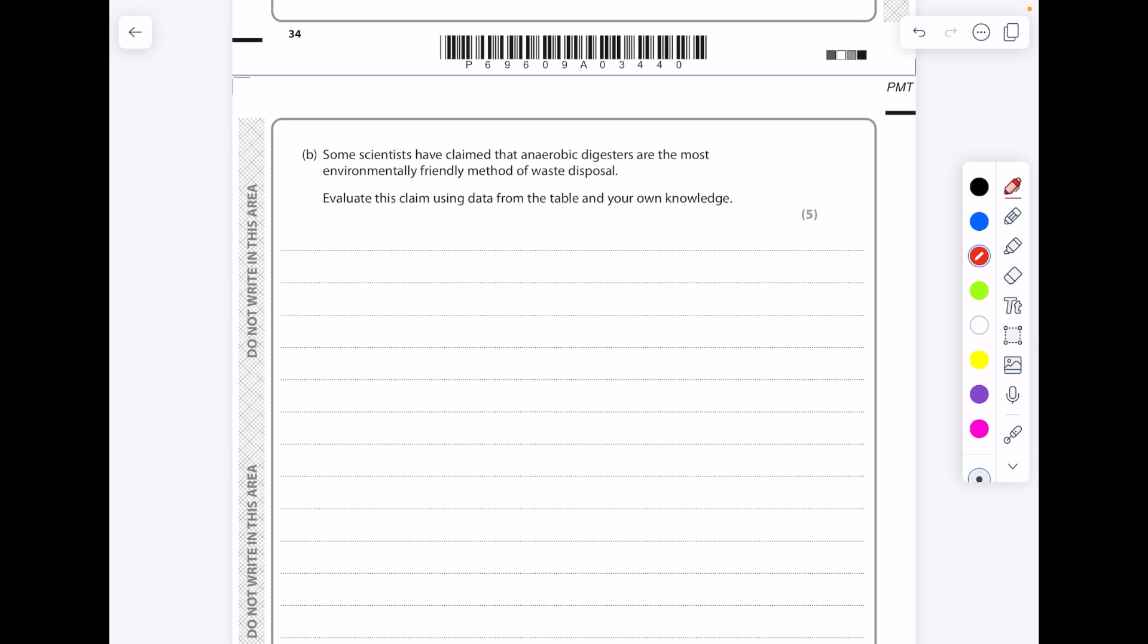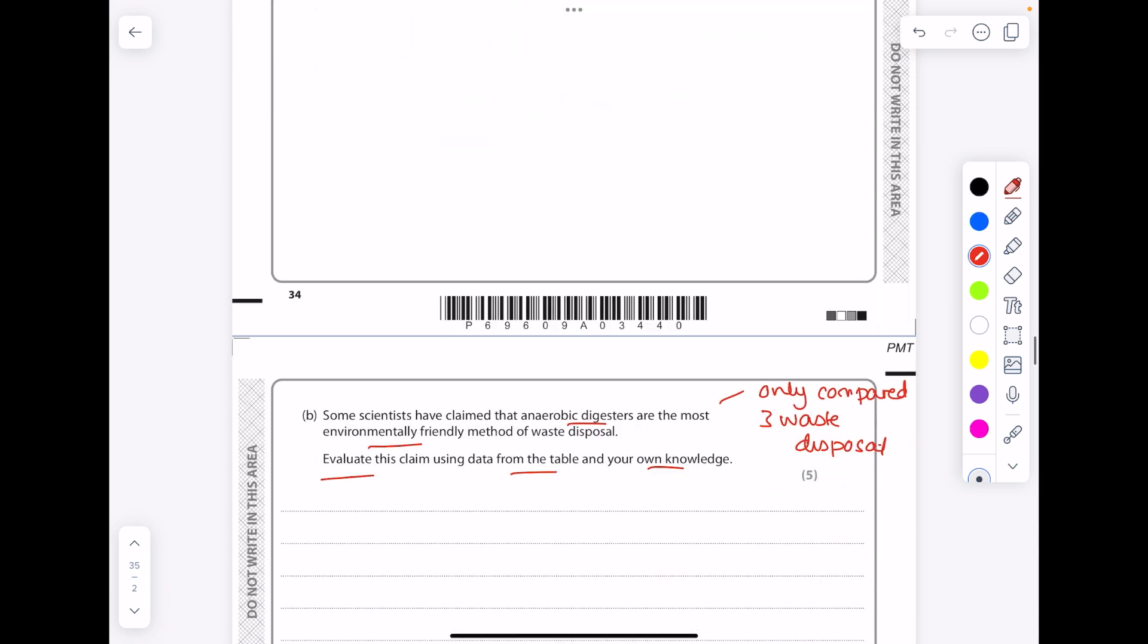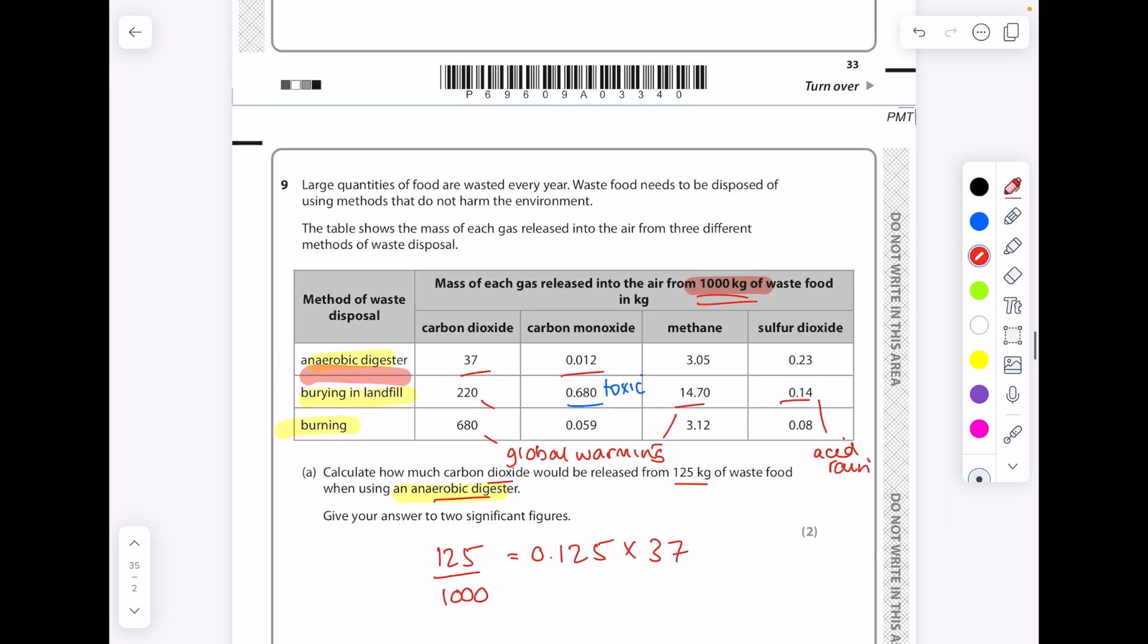Some scientists have claimed that anaerobic digesters are the most environmentally friendly method of waste disposal. Evaluate this claim using data from the table and your own knowledge. Well first of all, the most environmentally friendly method, we can't make that statement because it's too sweeping because we only compared three waste disposal methods. If you also look, it only looked at four waste gases in terms of pollutants. So this is us really looking at the experiment.